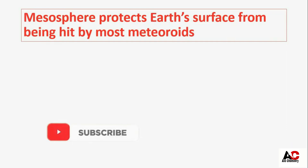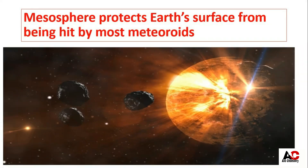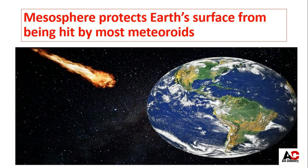The mesosphere protects the earth's surface from being hit by most meteoroids. Meteoroids are rocks in space, also called shooting stars or falling stars — they don't have their own light but they look like stars. Most meteoroids are composed of rocks, silicates, and metals. They move through space, and when they pass close to the earth they are attracted by its gravity and enter the atmosphere, moving from the exosphere through the thermosphere. When they reach the mesosphere, these particles burn up.